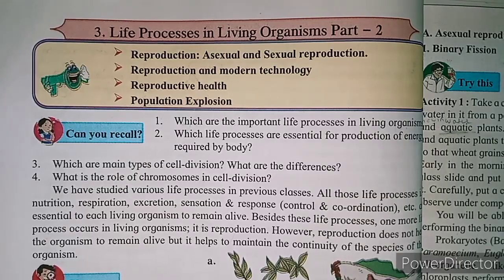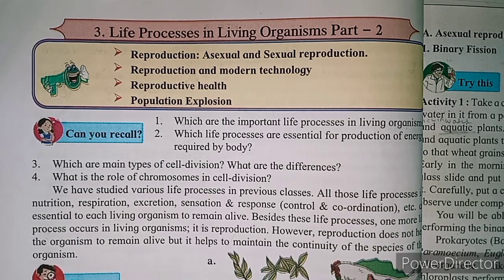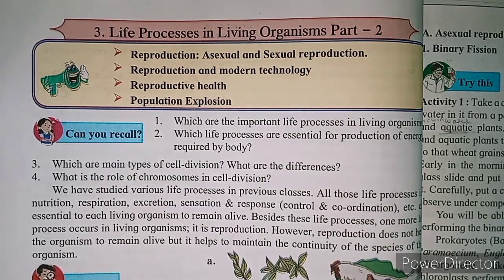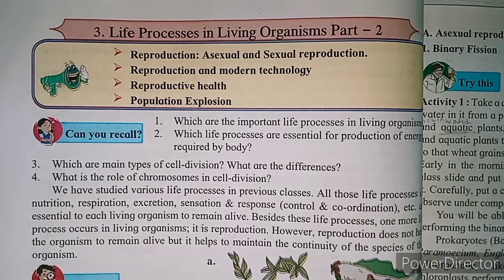Hello students. In the last video we discussed the third chapter, Life Process and Living Organism Part 2. We started asexual reproduction. There were two types: asexual reproduction in unicellular organisms and asexual reproduction in multicellular organisms. What was the case of asexual reproduction?